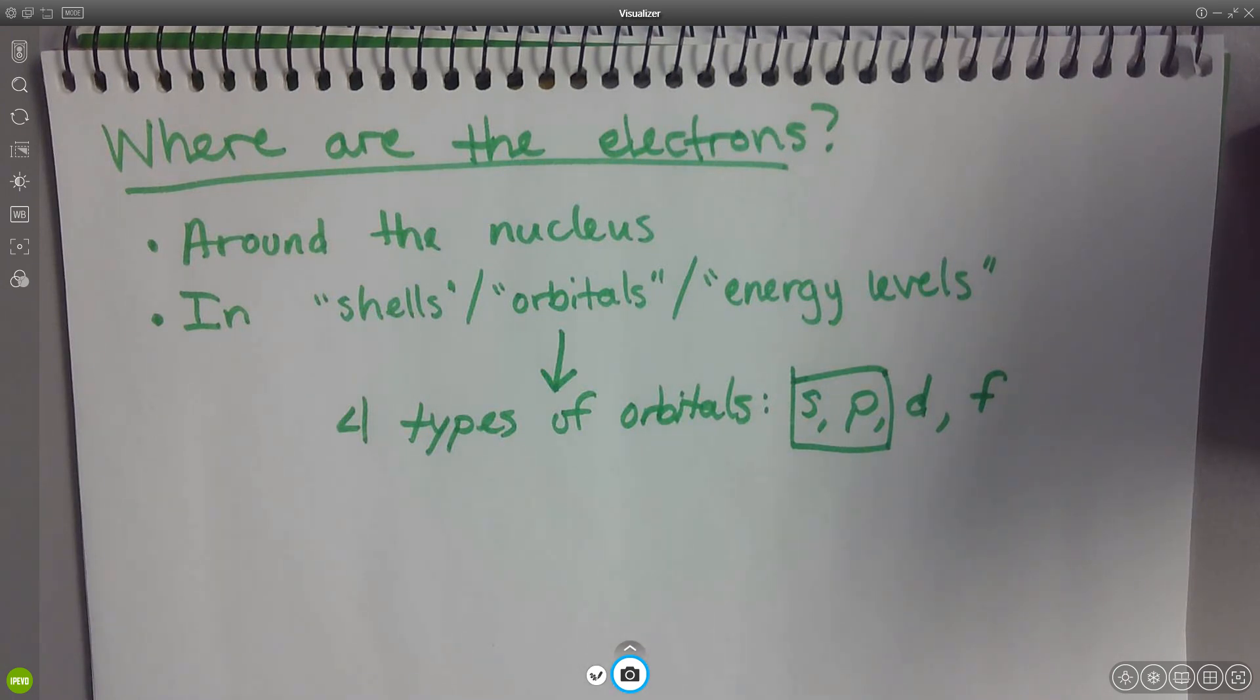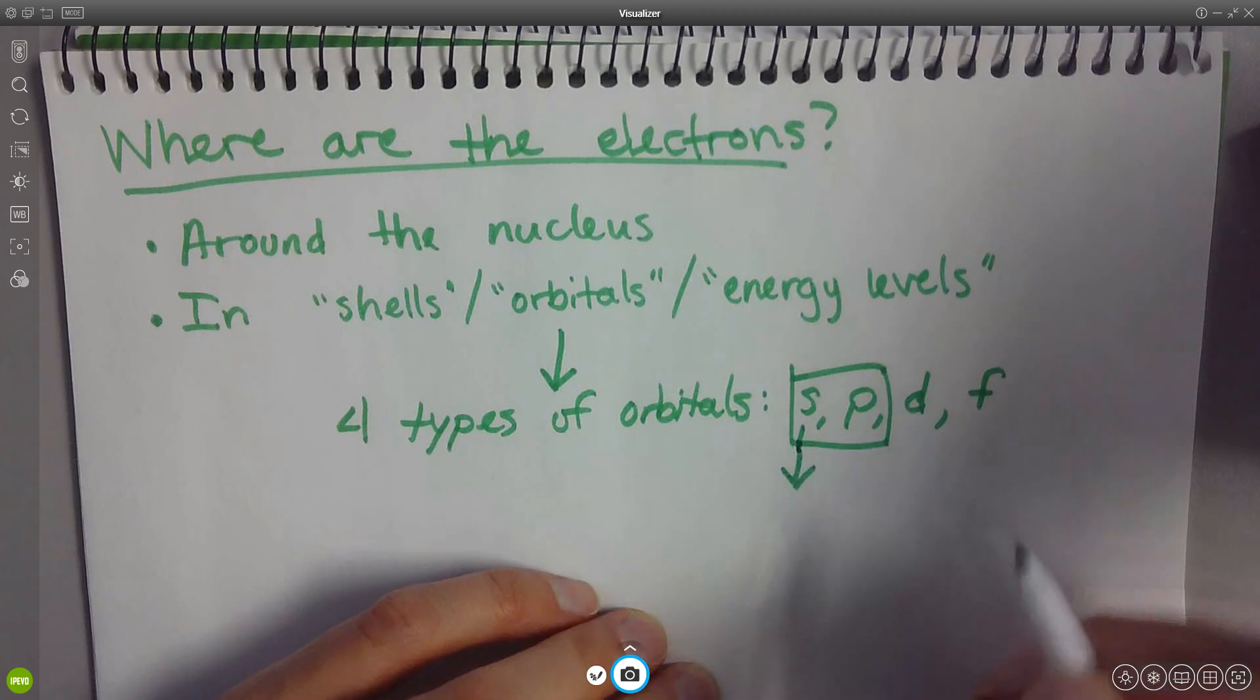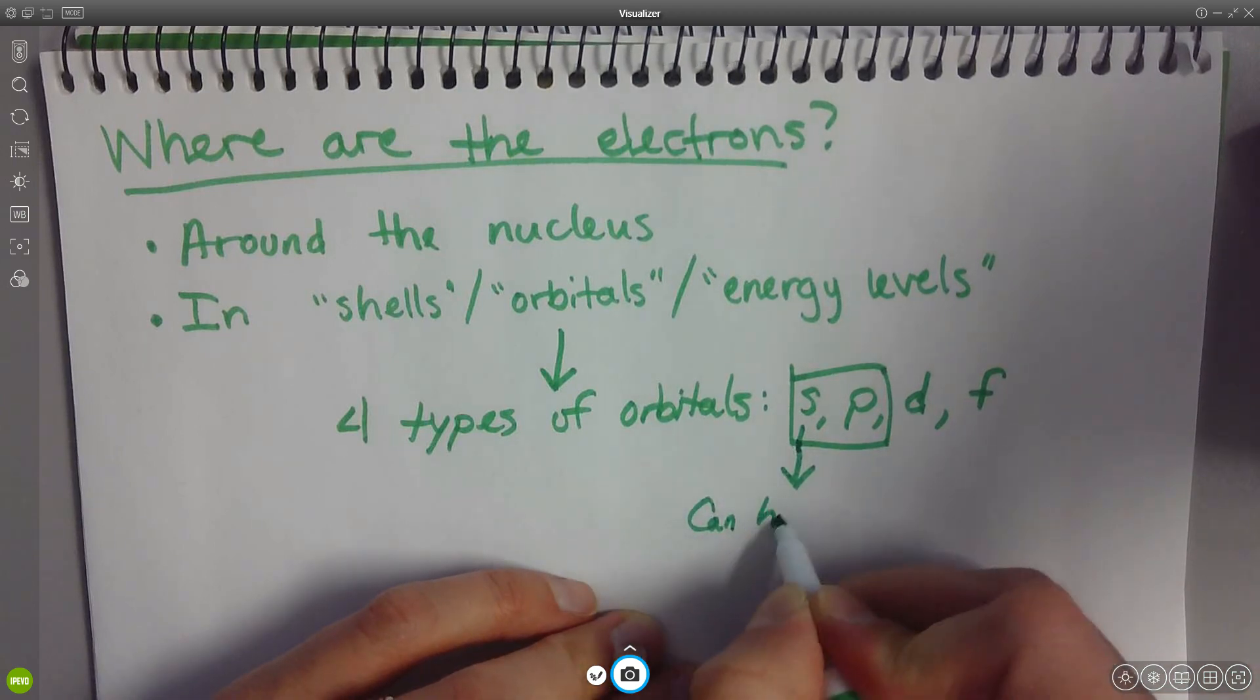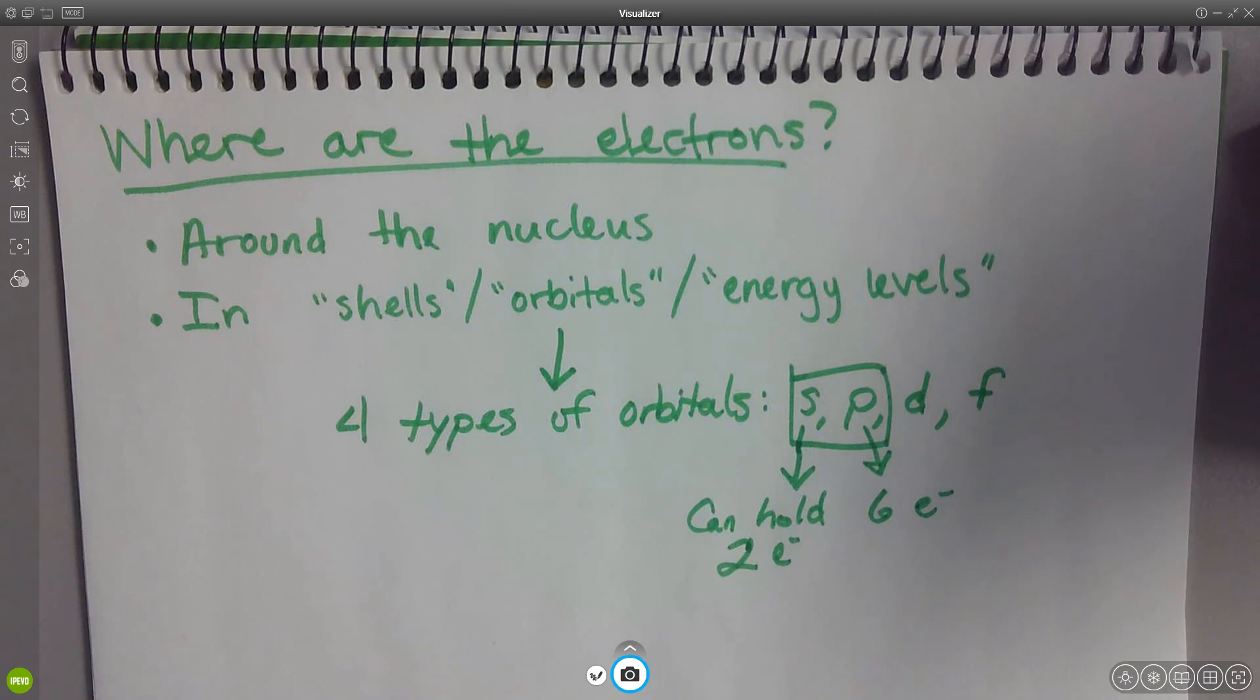The important thing here about the s and p orbitals is that s orbitals can hold two electrons and p orbitals can hold six electrons. Sound good? Pretty easy so far, right?